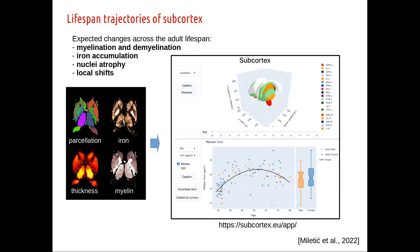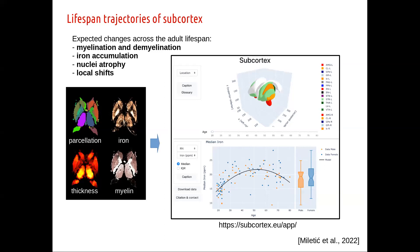To help ourselves and others make sense of these very complex results, we built a little app with a 3D viewer where you can rotate all the different structures, look at one structure specifically, and use an age slider to see how they change and move. Below you can inspect all the different curves for the different measurements we had, and all the data can also be downloaded and re-analyzed differently.